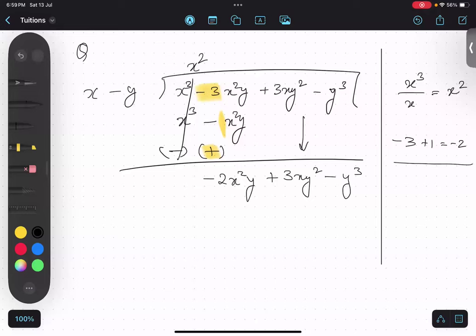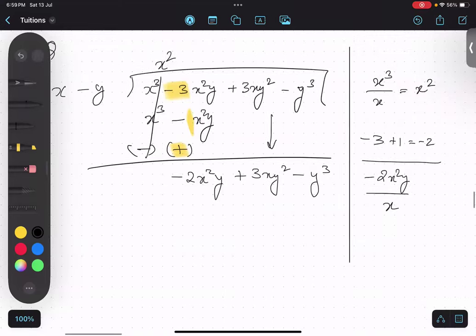So we will repeat the step. Take the first term from inside. Minus 2x²y. And take the first term from outside. So I will be getting minus 2xy. Yes or no?